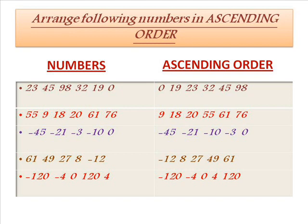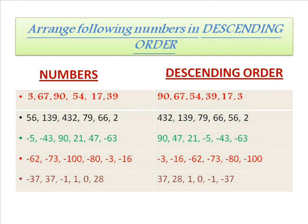And the last ascending order example is: minus 120, minus 4, 0, 120, and 4. The order is: minus 120, minus 4, 0, 4, 120. Now let's see more examples for descending order. In the left column I have taken some numbers which have no order, and in the right column I have arranged them in descending order.